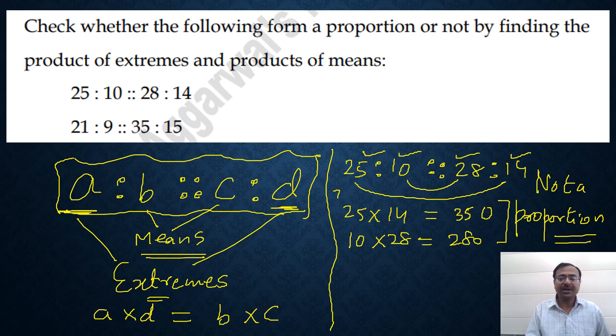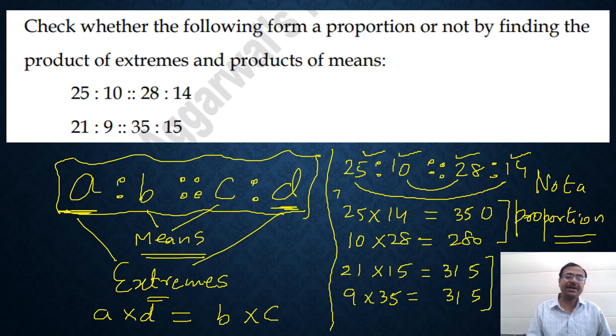Let's check the other one - 21, 9, 35 and 15. So if you take 21 and 15, the extremes, this is 15, 1 carry, so 315. And 9 and 35, that is again, say 5, 315. See, 315 in both cases and therefore, yes, it forms a proportion.